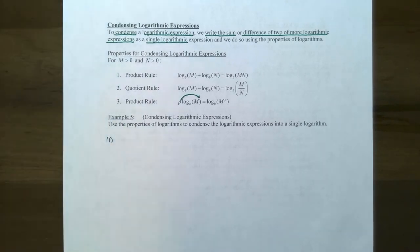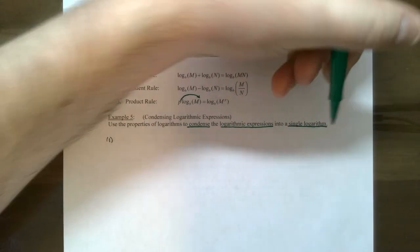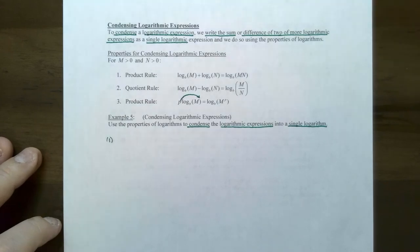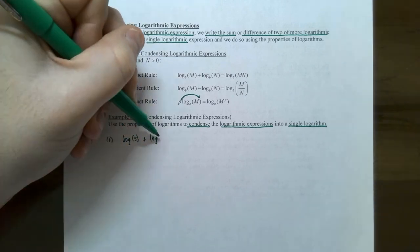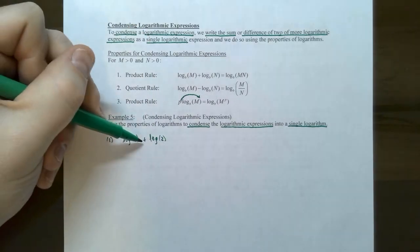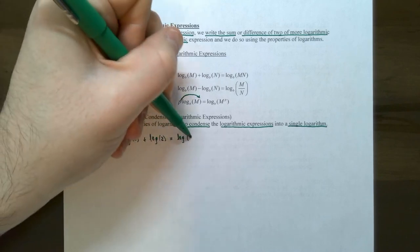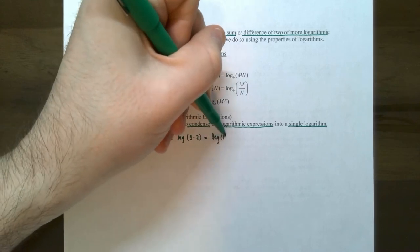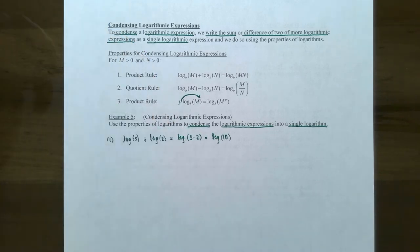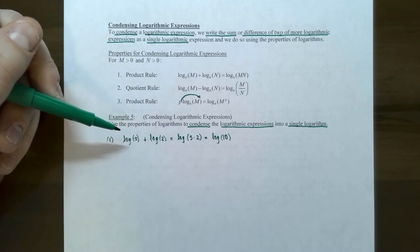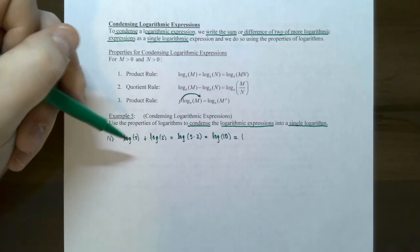Let's try example five: condense the logarithms into a single logarithm. Number one: log of five plus log of two. There's a plus between the logarithms, so use the product rule — multiply the arguments: log of five times two equals log of ten. And log of ten, base ten to what power is ten? It's one. So log of five plus log of two simplifies all the way to one.